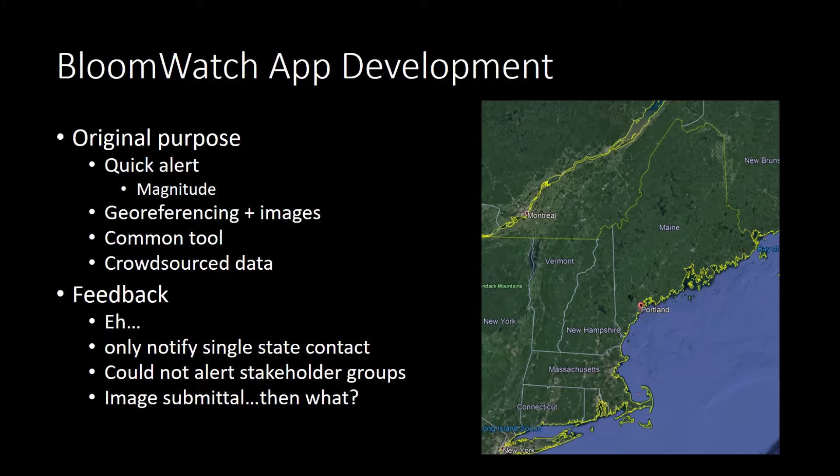Just as an example using the state of Maine — if someone gets a call at Maine DEP to look at a bloom, it's going to take them a long time to get from Portland up to Fort Kent, and the bloom will likely be gone by then. We got some funding together to hire research developers in Corvallis to build the app — the same people who developed the apps for all our national resource surveys for EPA.